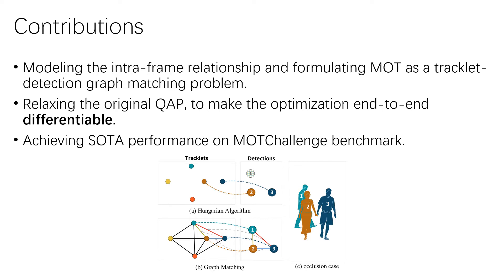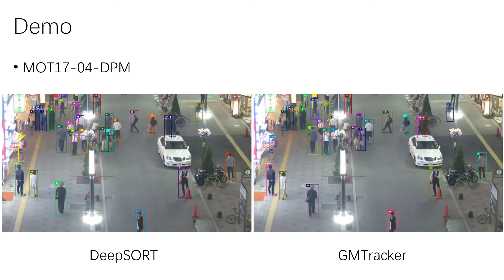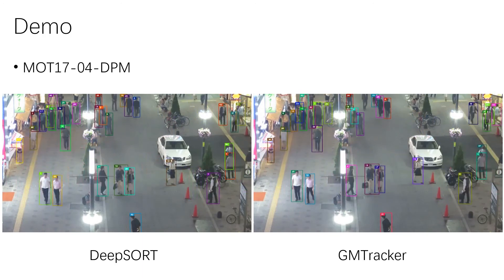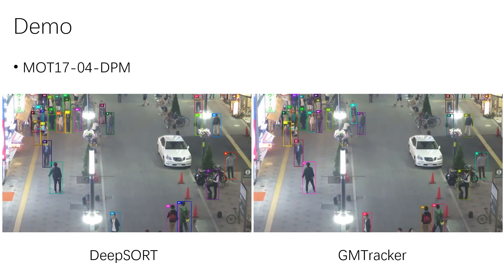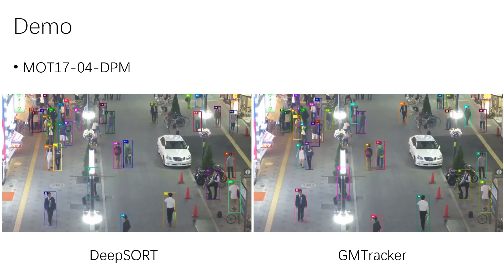We evaluate our proposed GM tracker on the MOT challenge benchmark. Our method achieves state-of-the-art performance in terms of association metrics such as IDF1. Here, we show the difference between DeepSORT and our graph matching method. In DeepSORT, the Hungarian algorithm is used to do bipartite matching. However, in graph matching, as we model the intra-graph relationship on the edge, we formulate the second-order edge-to-edge matching cost. In the highly occluded scene, we expect more robust matching. We demonstrate the tracking results on the MOT17-04 video using the public detector DPM. Comparing with DeepSORT, our method has fewer ID switches.